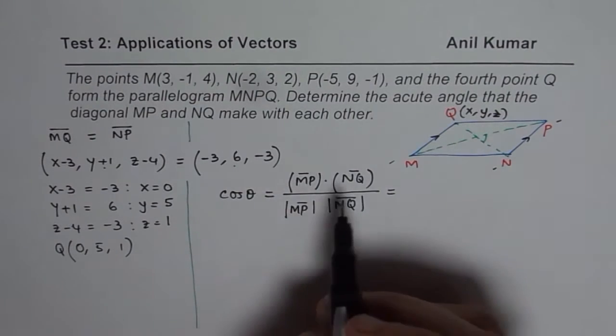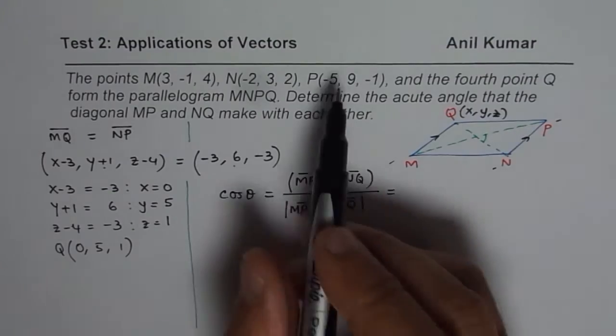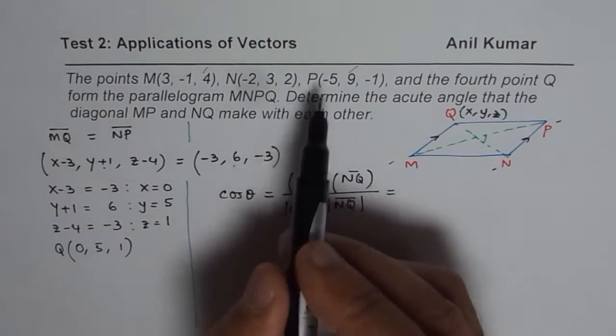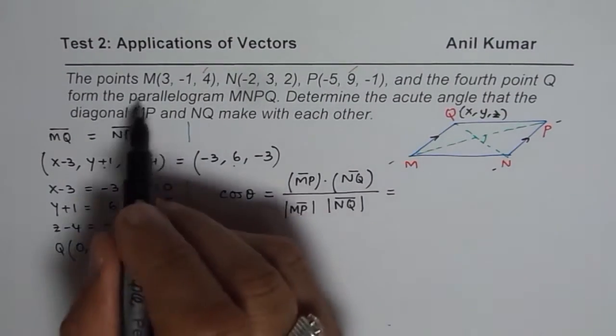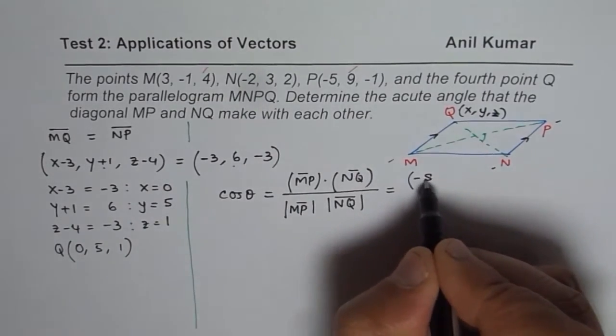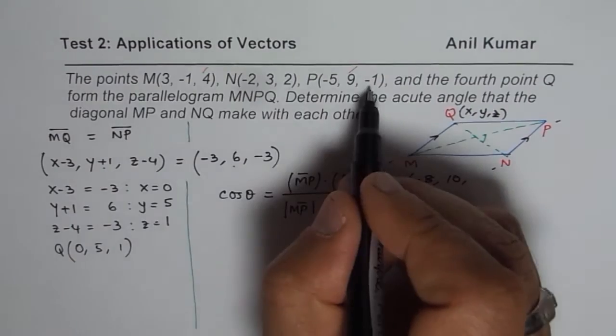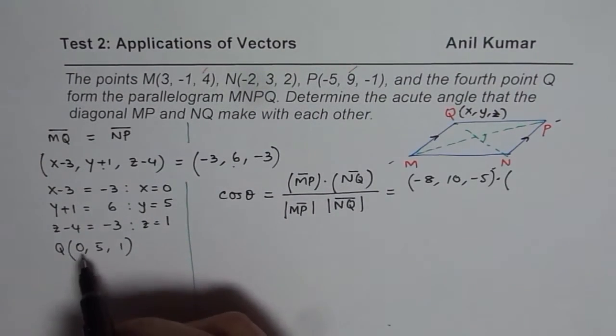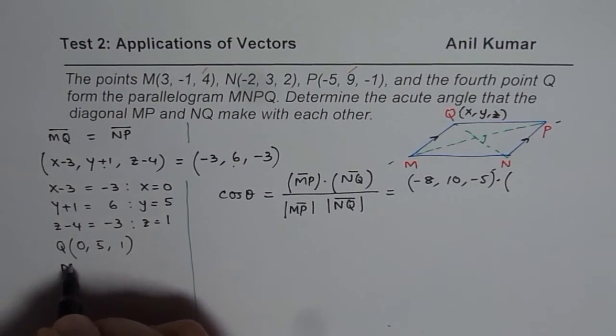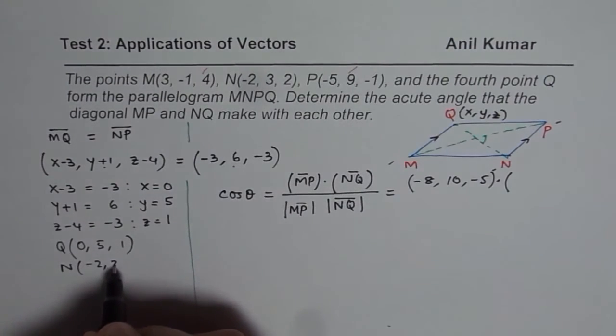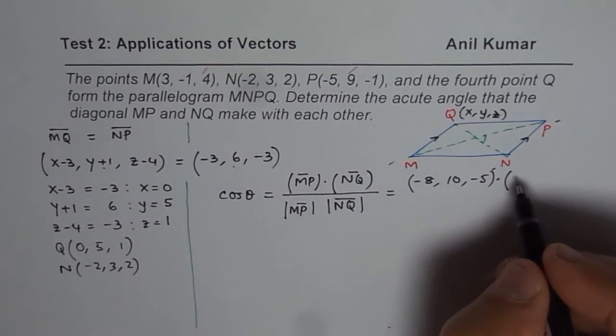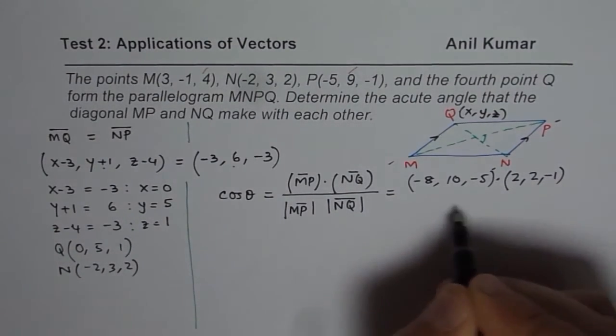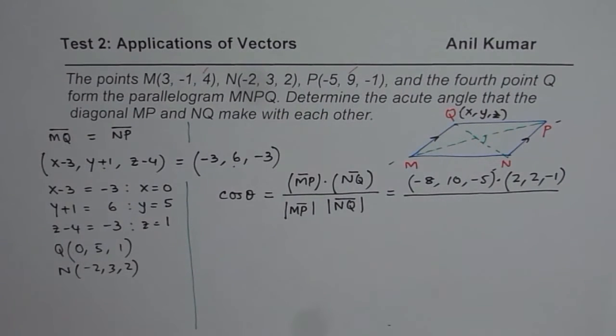So let's calculate MP. Now, MP will be, so we'll just do from these two points. So M and P, so we have MP could be written as (-5 - 3 = -8, 9 - (-1) = 10, -1 - 4 = -5). So that is MP, dot NQ. N to Q, so we'll do Q point as (0, 5, 1). So let's write down all the points. So we'll write N also here, so it becomes easier for us. N is (-2, 3, 2). So NQ will be (0 - (-2) = 2, 5 - 3 = 2, 1 - 2 = -1). So that is how we get the values for each vector.